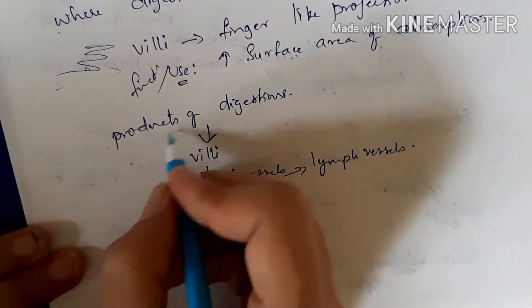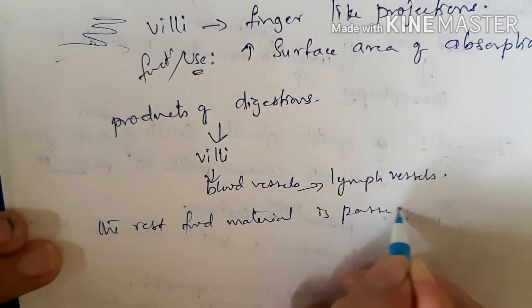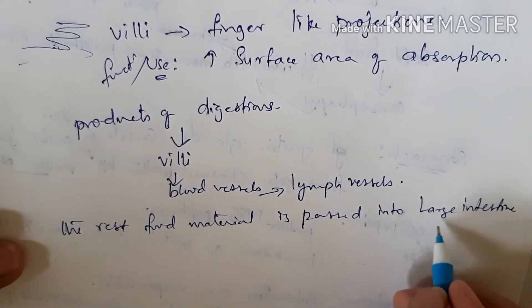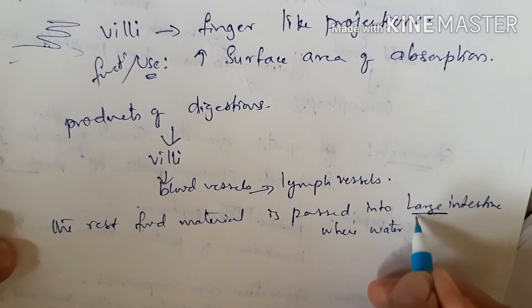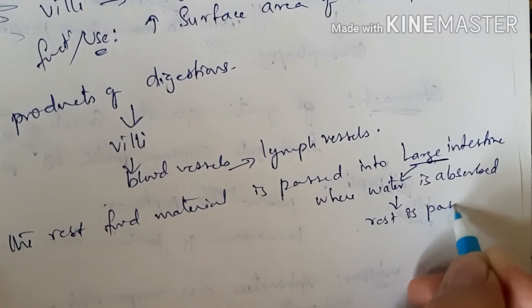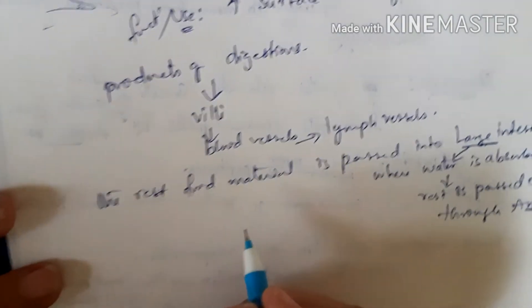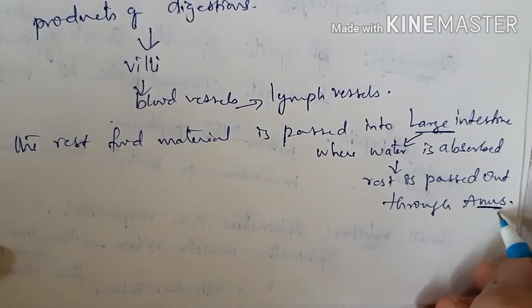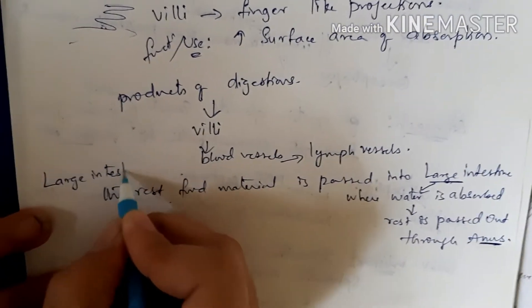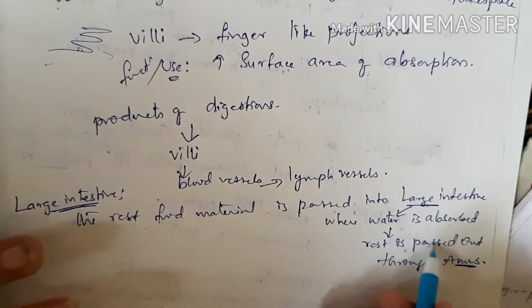The rest of the food material — the undigested material — is passed into the large intestine, where water is absorbed. The remaining undigested food material is then passed out through the anus, which is the external opening for waste or undigested food material. So in the large intestine, water is absorbed and the rest is eliminated through the anus.